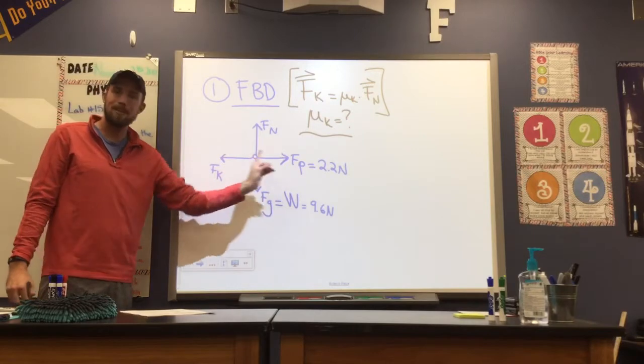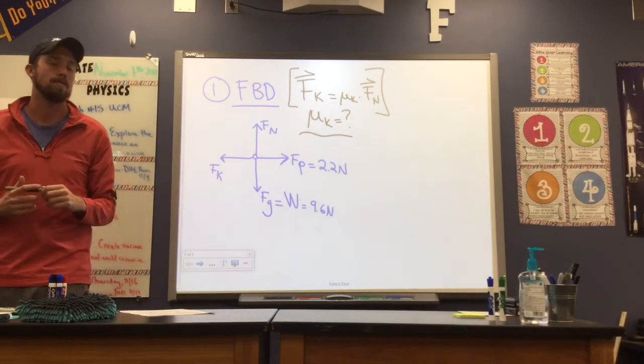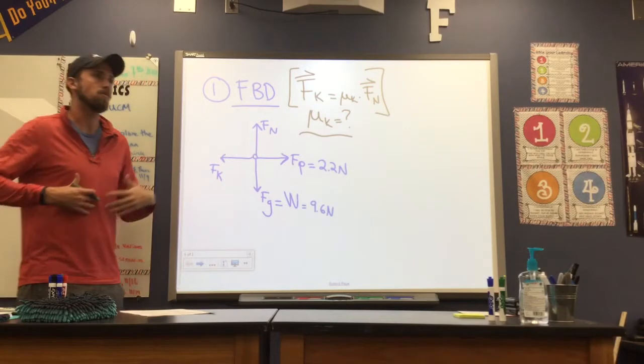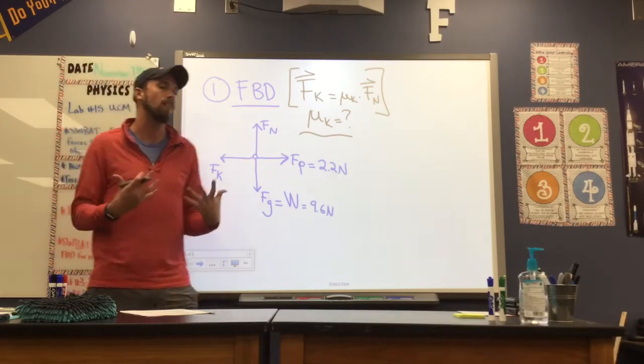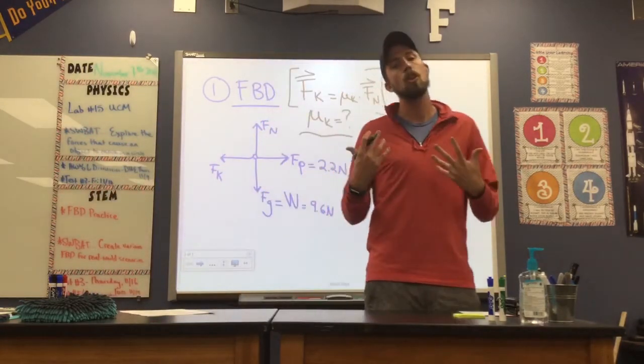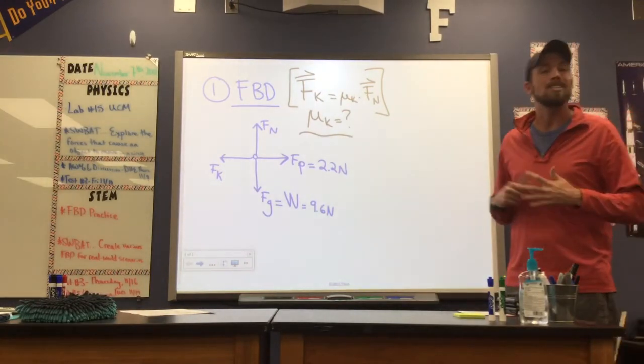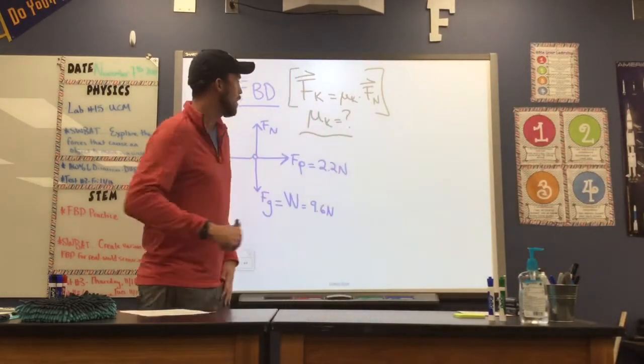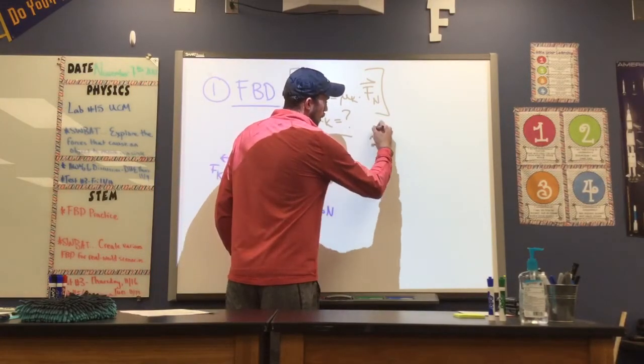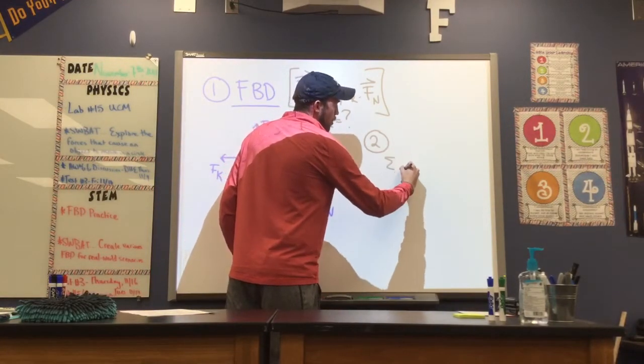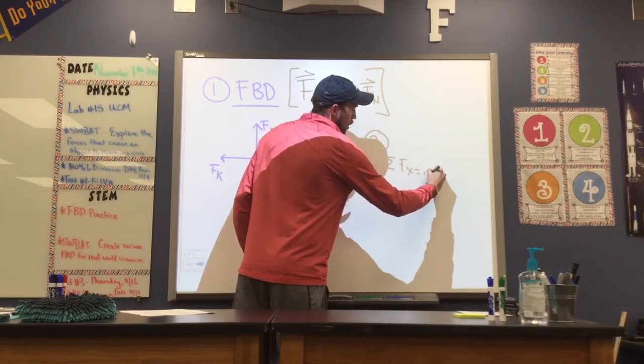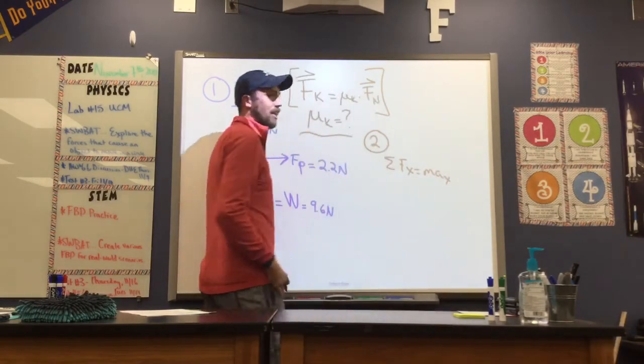So in order for us to find that coefficient we need two things. One, our frictional force. And two, our normal force. Frictional force shows up in the x direction. Normal force is going to be in the y. So where we're going to need to go is where we typically go. We want to try to figure out what's going on with those two forces. So now that we have a free body diagram, we're going to use Newton's second law. Remember, second step is our second law. So step two. It's going to look like this. Sum of forces in the x direction is mass times acceleration in the x. We'll start there.